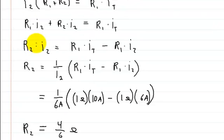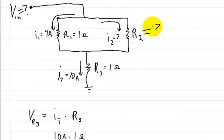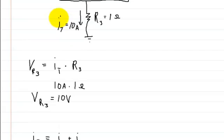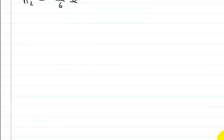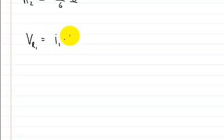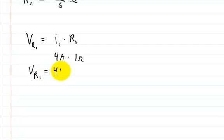So now we've solved for R2 and for I2. Let's also solve for the voltage across R1. The voltage on R1 is equal to the current I1 times R1. The current through it was 4 amps times R1 which was 1 ohm, so the voltage on R1 is equal to 4 volts.